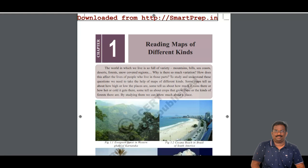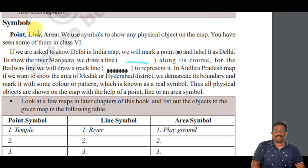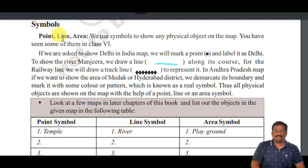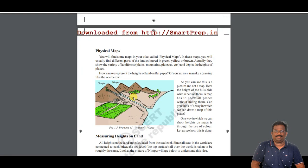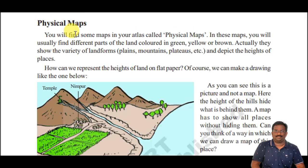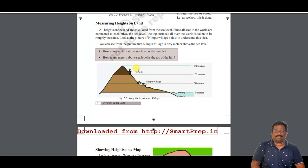The chapter is 'Reading Maps of Different Kinds.' In this chapter we have learned about various concepts like symbols — point, line, area — and we also learned about the physical map, including colors and which part of the physical feature shows which type of color.